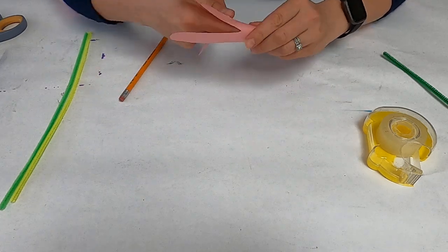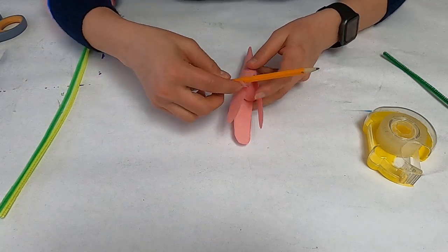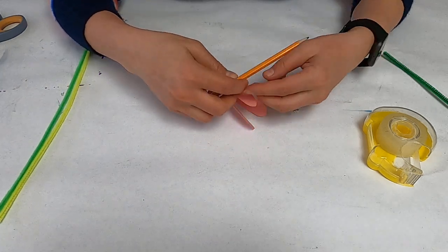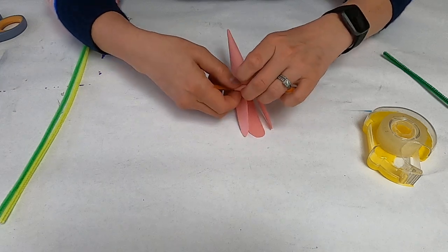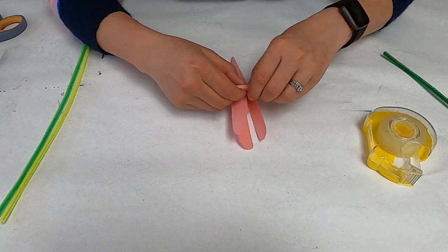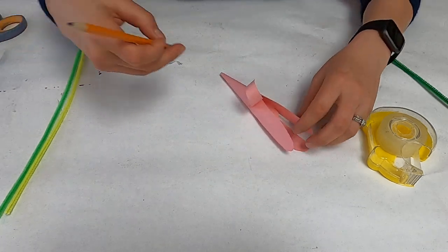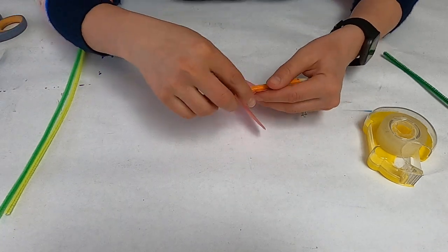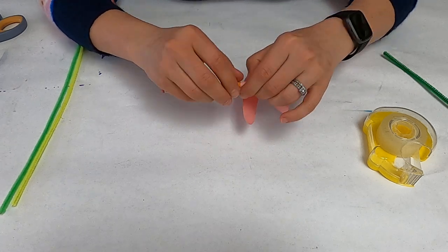What you want to do is take something to roll it with, like a pencil or a pen or a marker. Taking each individual petal, which are your fingers, you want to take it and roll it back just like that. When you let go, it creates this petal that curls downward. You want to keep doing that for the other ones.